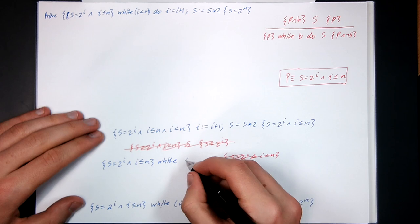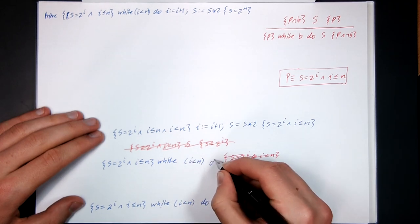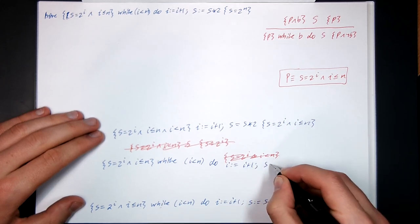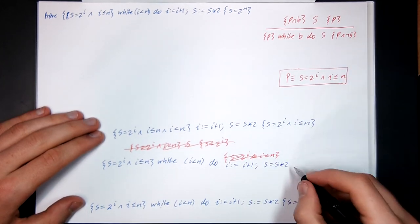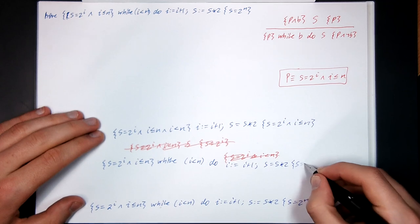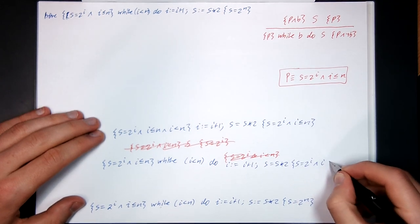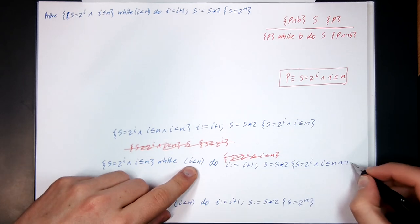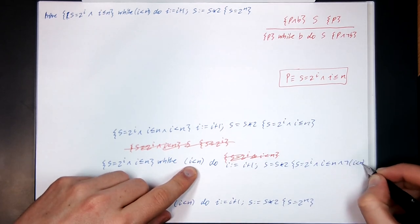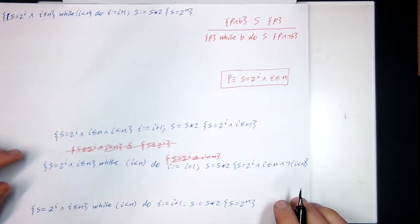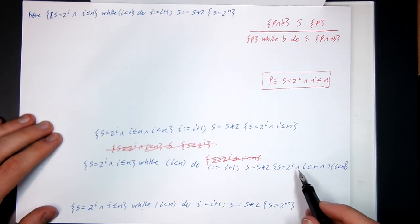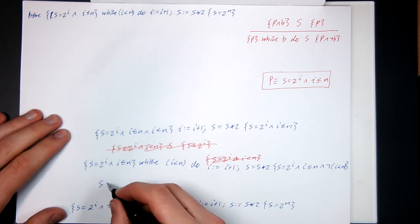While B, I strictly less than N, do the code. My post condition is P and not B. So S equals 2 to the I and I less than or equal to N and this condition is false. So it's false to say I strictly less than N. If this condition is true can I now jump down to here? Well let's see.